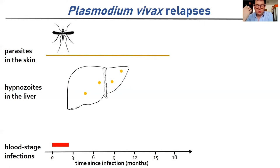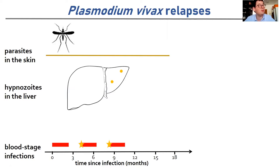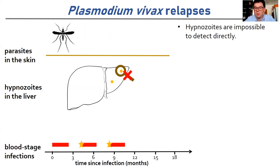However, for vivax, we also have these dormant liver stage parasites called hypnozoites, which remain in the liver for weeks, months, or years until they relapse to cause new blood stage infection. The process continues until the liver has cleared of hypnozoites. This is the paradigm for vivax: one mosquito bite, many different blood stage infections.